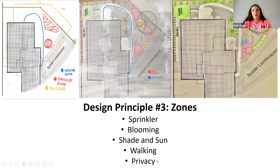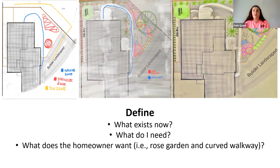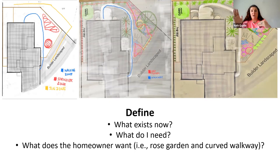Where are you going to sit? Where do you want privacy? What's existing now, what do I need, what does the homeowner want? Make multiple drafts and keep asking and answering questions as best you can for everyone in the house. I always encourage both partners in a household to be together when deciding, because one wants one thing and the other wants another. Decide what's the most important — the number one objective for this property — and go from there.